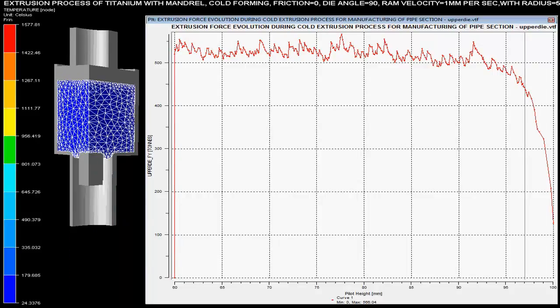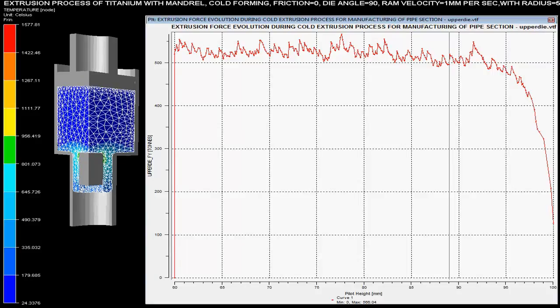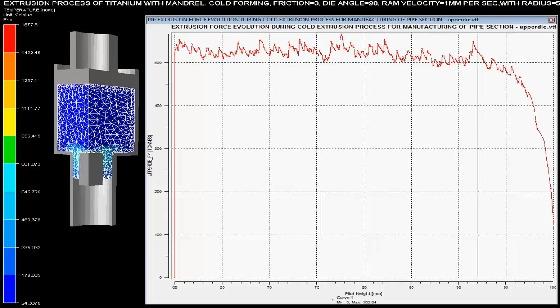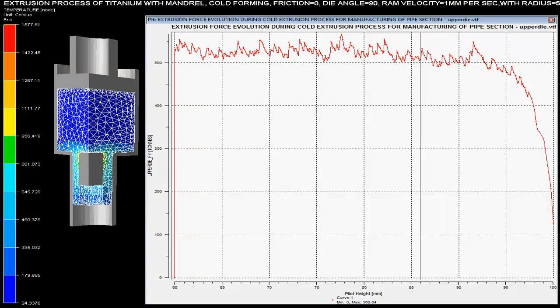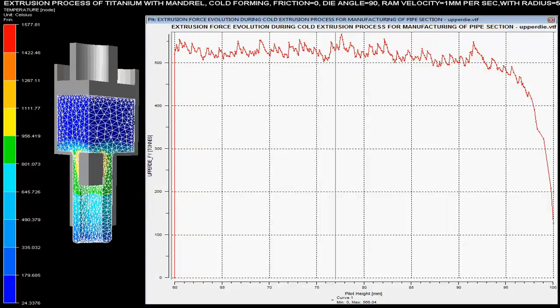Extrusion forces with respect to pilot height are shown over the graph. These forces are maximum when there is sudden change in the area of the cross section of the billet. As the pilot height reduces, the force required for the extrusion of the pipe is increased.